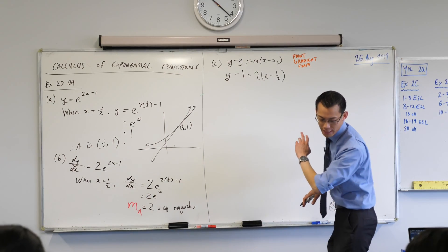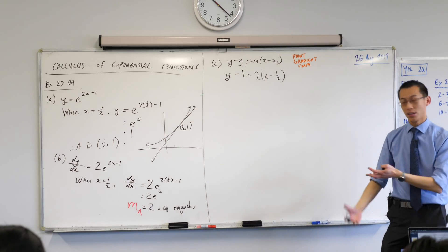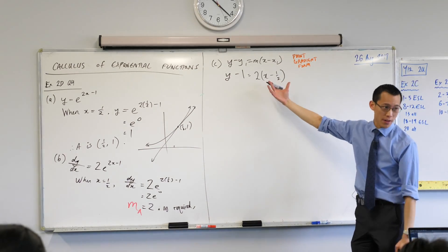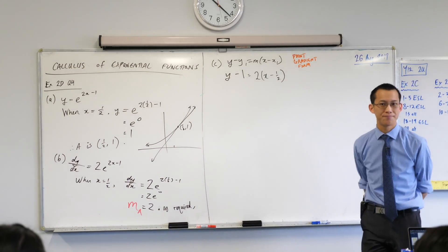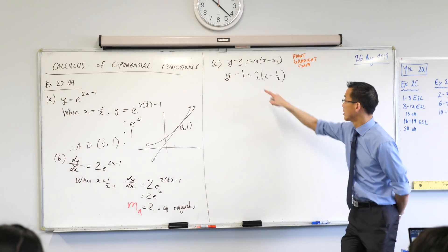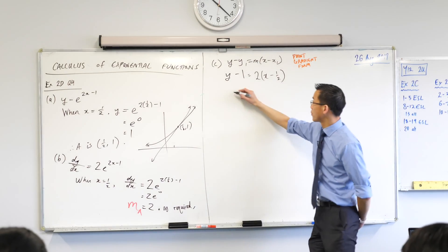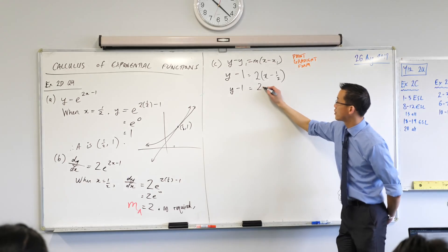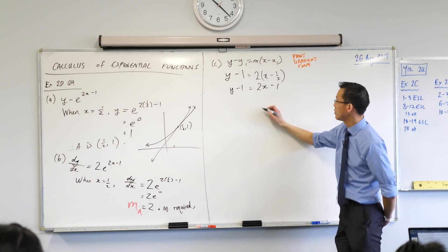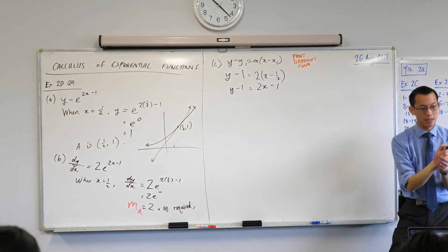It says hence find the equation of the tangent at A. It didn't say in any particular form, but surely I can simplify this, right? What might be the first thing you do? Expand the... Yep, this guy we can simplify by expanding, so I'll write 2X minus 1. Thank you.